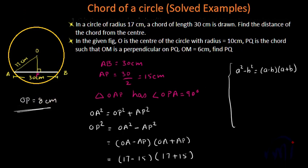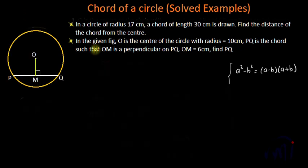Now let's solve this second problem. The problem statement is: in the given figure, O is the center of the circle with radius equal to 10 centimeters. PQ is a chord such that OM is perpendicular on PQ. OM is equal to 6 centimeters. Find PQ.